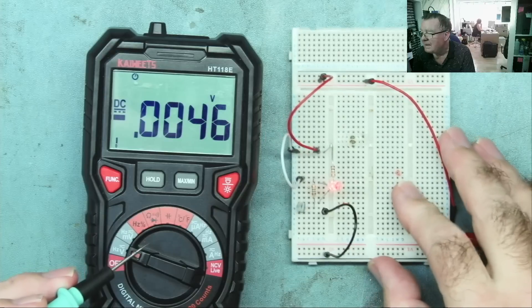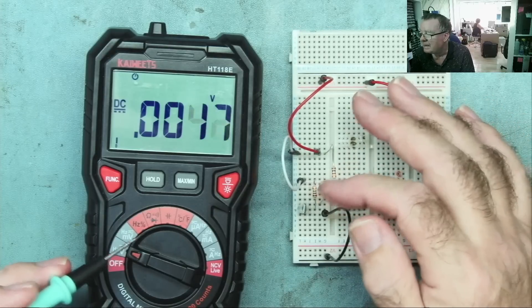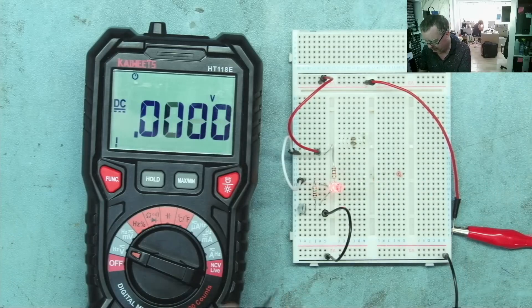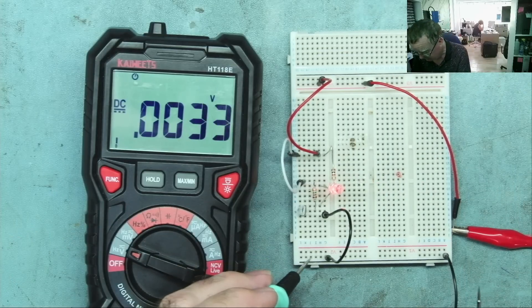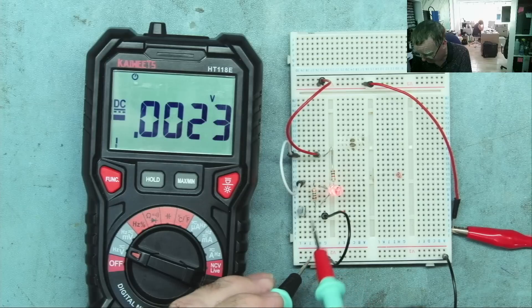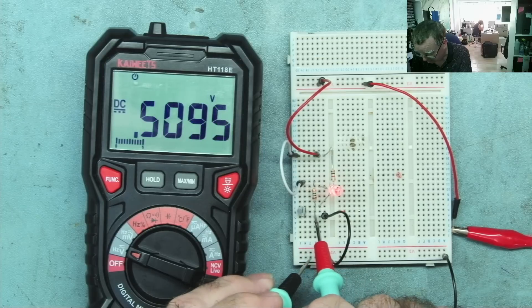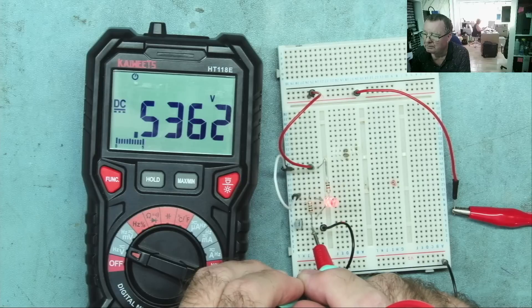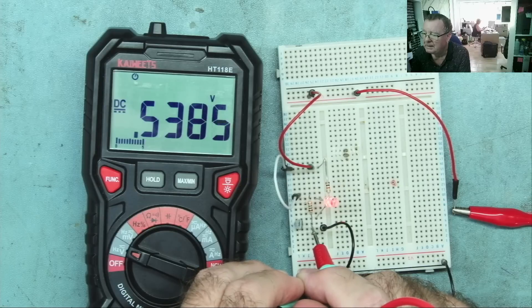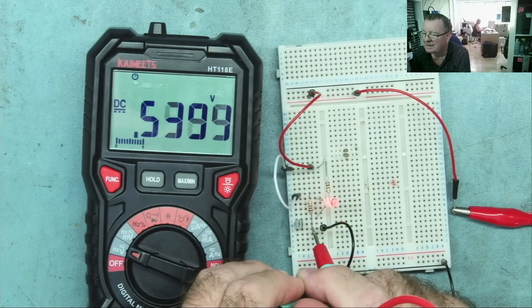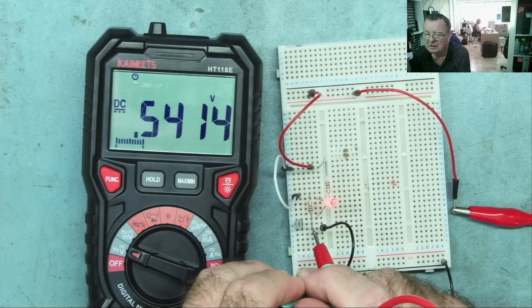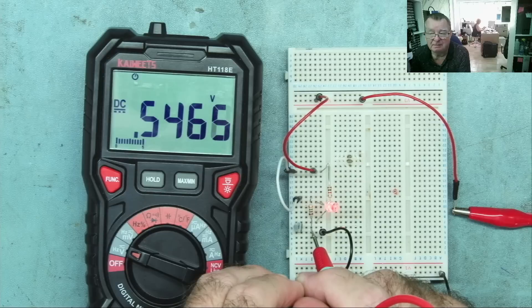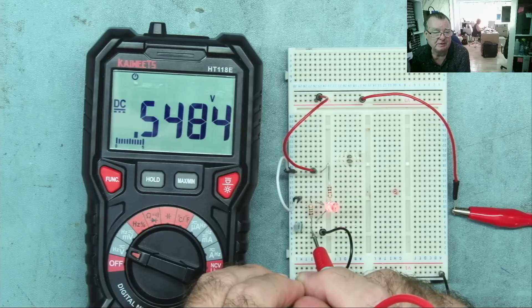So I'll now connect the gate of the JFET via the 1M resistor to the power. Incoming power. Positive. What voltage do we find on the gate? Well, 0.53, 0.54 volts. So the voltage on the gate is actually very similar to the forward voltage drop of a base emitter junction. Very, very similar. In fact, it's just increasing a little bit on its own.